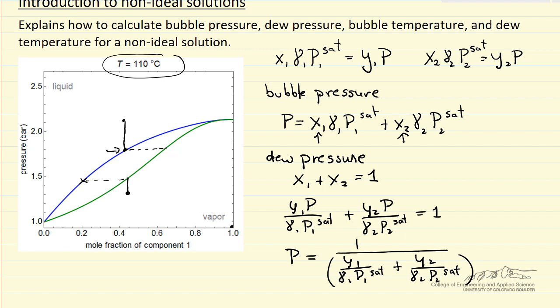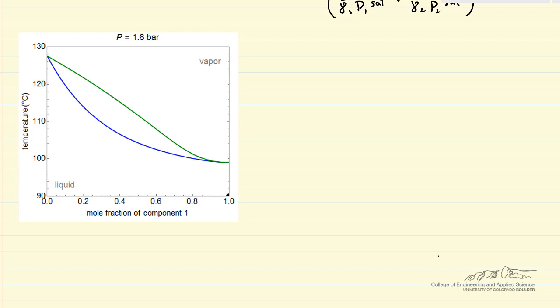Now we want to look at the equivalent on a temperature mole fraction diagram for the bubble temperature and the dew temperature. Here we have a temperature mole fraction diagram. We fix the pressure. Let's first look at the bubble temperature. The idea is we have a liquid at some composition, and as we raise the temperature, we'll get to the point where the first bubble of vapor forms, and this would be its composition.